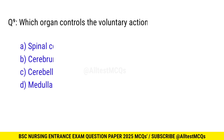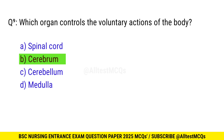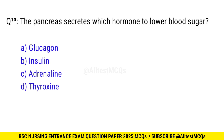Question No. 9: Which organ controls the voluntary actions of the body? The right option is B: Cerebrum. Question No. 10: The pancreas secretes which hormone to lower blood sugar? The correct option is B: Insulin.